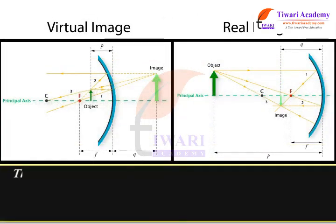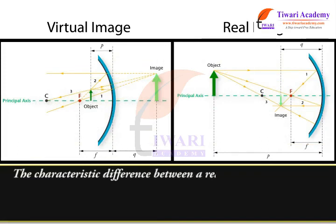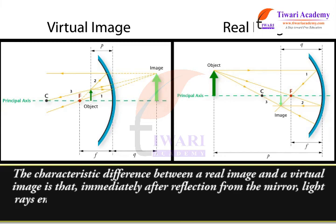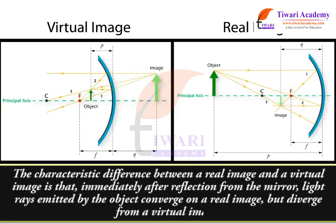The characteristic difference between a real image and a virtual image is that immediately after reflection from the mirror light rays emitted by the object converge on a real image but diverge from a virtual image.